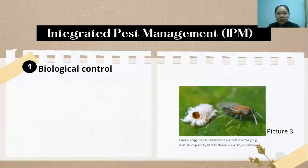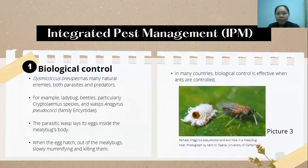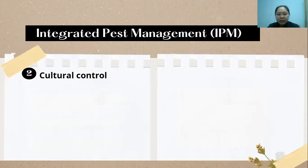Now for integrated pest management. The first method is biological control, using natural enemies to control the pineapple mealybug through parasitoids and predators. Predators such as mealybug destroyers can directly feed on the mealybug, while the parasitoid wasp Anagyrus pseudococci will lay eggs in the body of the mealybug. When the eggs hatch, the larvae exit the mealybug, slowly mummifying and killing it.